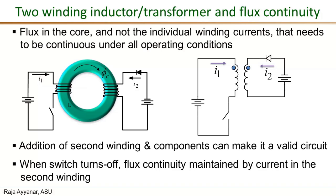In part one of the flux continuity video we considered an example case where we had a single winding on a ferrite core, connected directly in series with a switch. When the switch is turned on we apply a constant voltage across the winding — voltage applied across an inductor causes the current to rise linearly, and therefore the flux in the core also rises linearly. When you turn off the switch instantaneously, the current i1 comes to zero, which means the flux also comes to zero instantaneously from a finite positive value, and that is not allowed — it violates the flux continuity requirement.